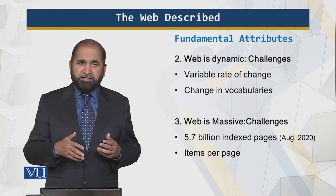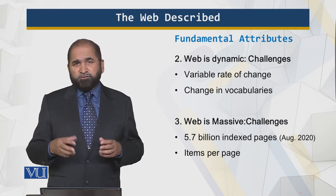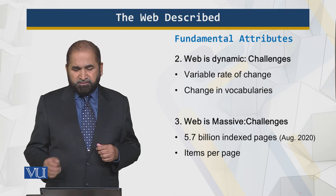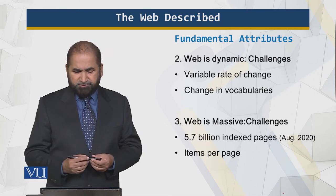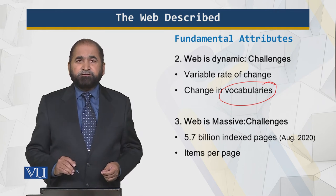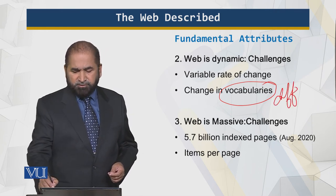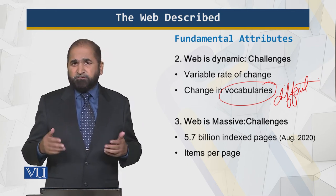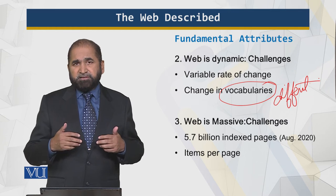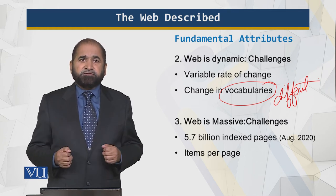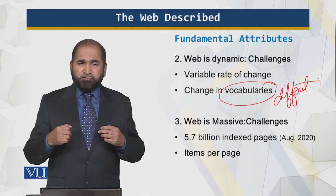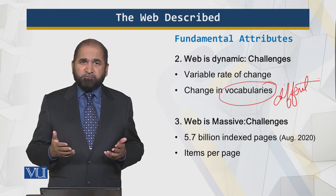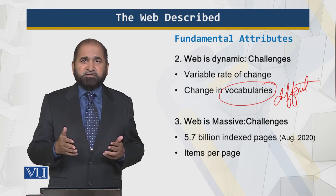The web is dynamic, with a variable rate of change. Content can be removed or added at any time with no limits defined. Then there is change in vocabularies — this is different from the vocabulary challenge discussed in the last slide. Since the web is dynamic, the meaning of things changes over time; new words and new concepts are introduced. The vocabulary changes and you cannot say with certainty what something means, because the meaning has changed.